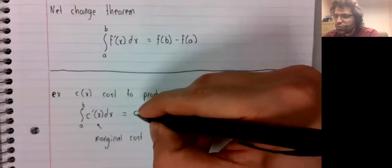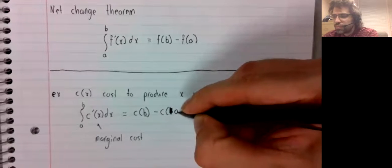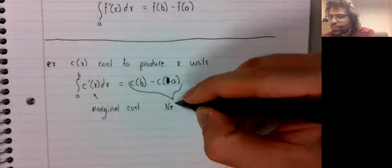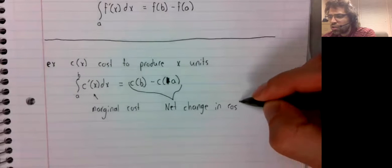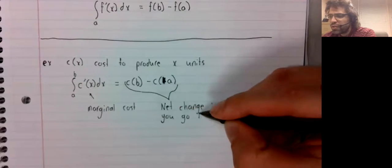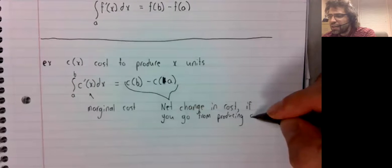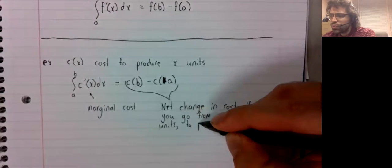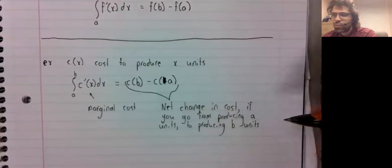And the integral of the derivative is this difference. And what this represents is the net change in cost if you go from producing a units to producing b units.